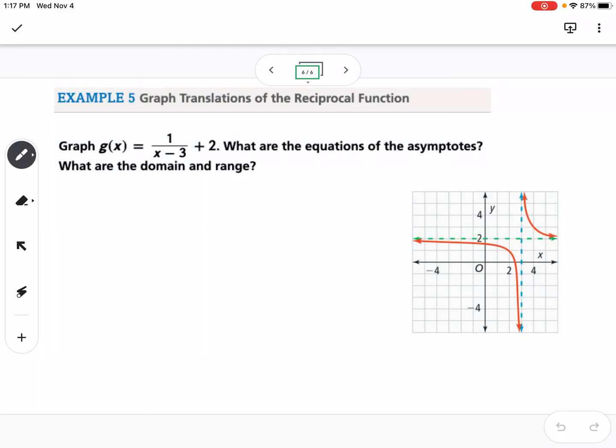Our last example is talking about reciprocal functions and transformations. With transformations, it's 1 over x minus h plus k. You've done stuff with h and k before with polynomial functions and quadratics. We've looked at h and k, they mean the same thing in this case. Because we have x minus 3 in the denominator, this is going to be shifted to the right 3, and the plus 2 means it's shifted up 2.